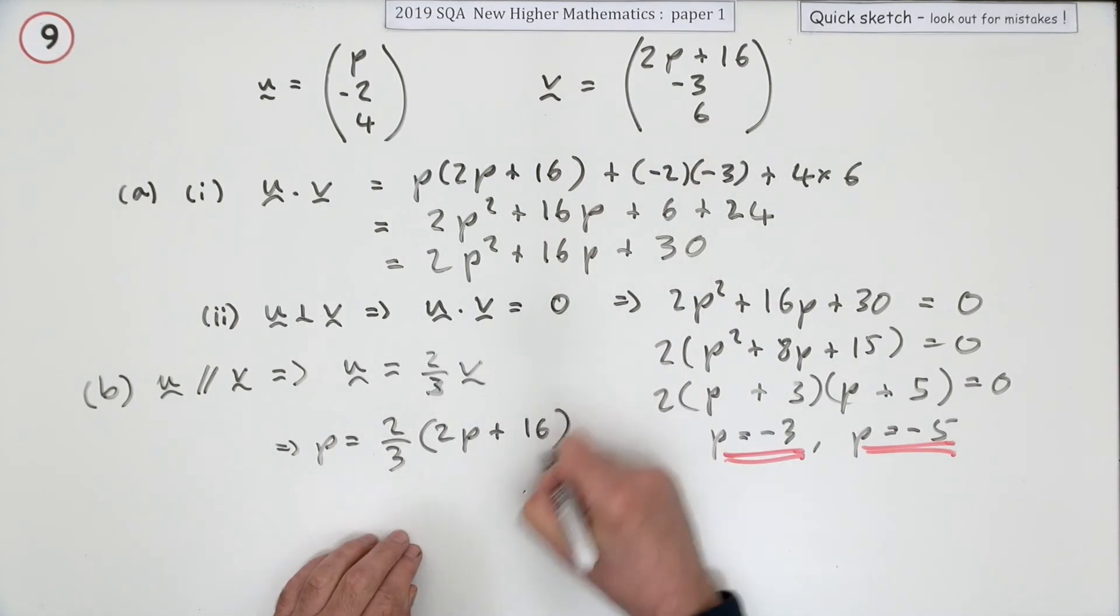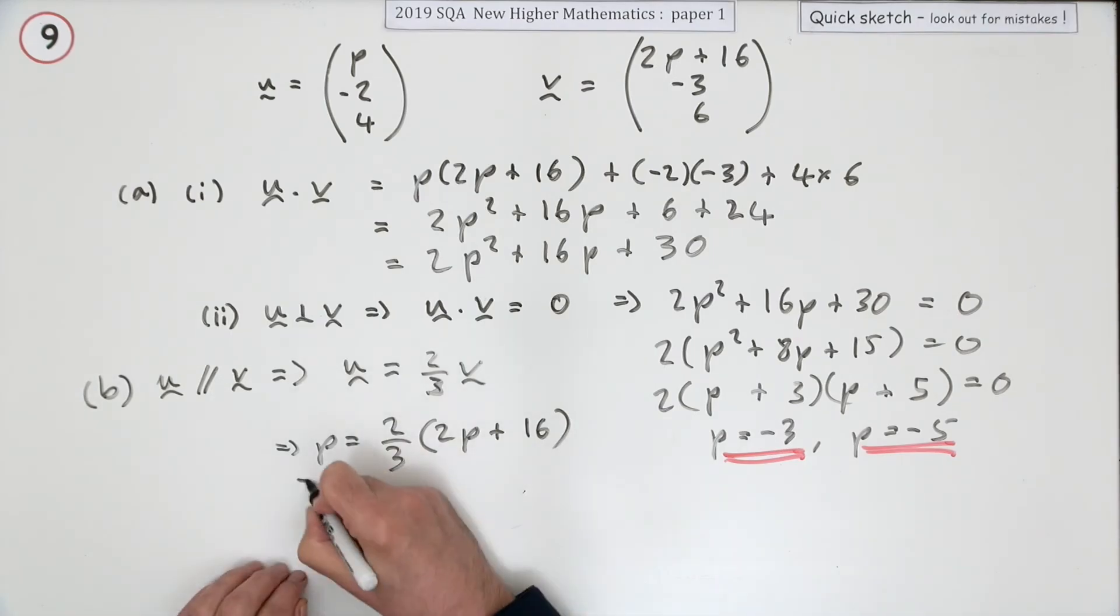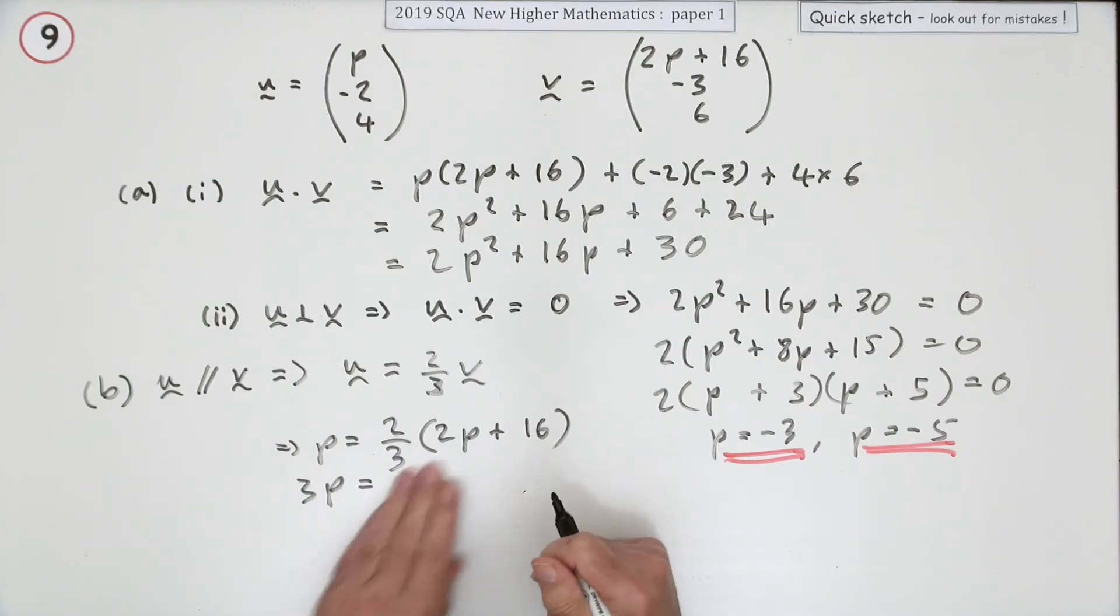Just get rid of the fraction. 3p is two times it, or I could just save a bit of time: two times that would be 4p and two times that would be 32. Bring that across to here, knocking it down to 1p. Bring that across and it becomes an ungainly -32.